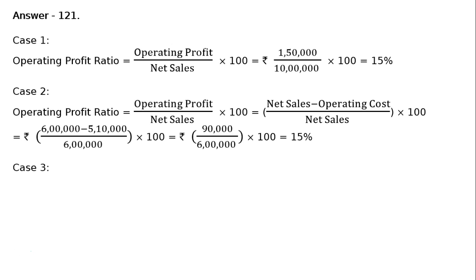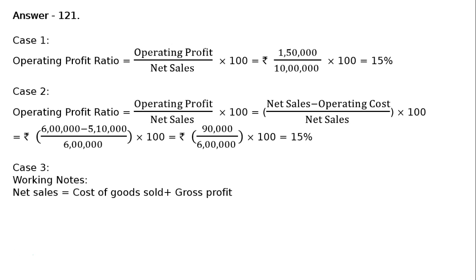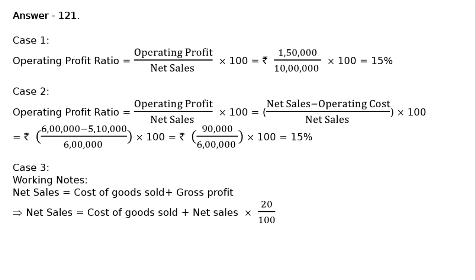Case 3: revenue from operations, gross profit on sales, and operating expenses are given. Working notes: net sales is equal to cost of goods sold plus gross profit, which implies net sales is equal to cost of goods sold plus net sales into 20 by 100.